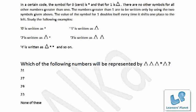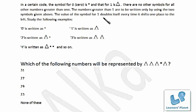I have a set of questions — a paragraph giving information followed by 4 to 5 questions based on that information. The first thing to do is read the comprehension and find out the coding. In a certain code, the symbol for 0 is star and for 1 is delta. There are no other symbols. For all numbers greater than 1, only these two symbols are used. The value of the symbol for 1 doubles every time it shifts one place to the left.